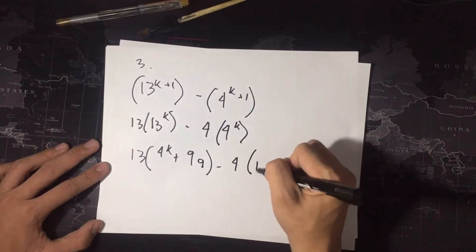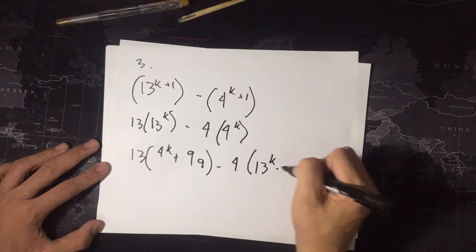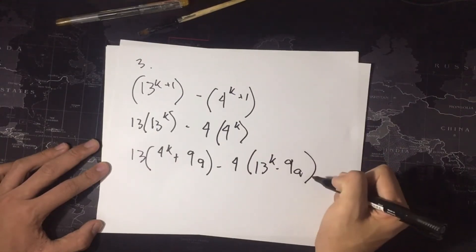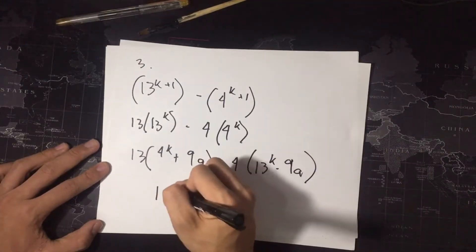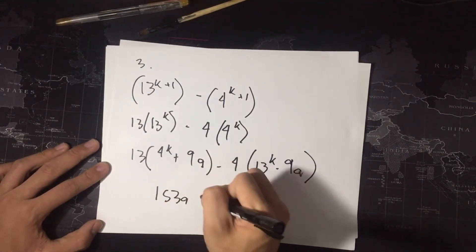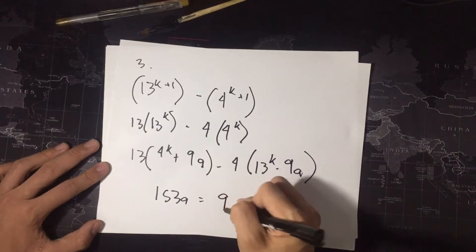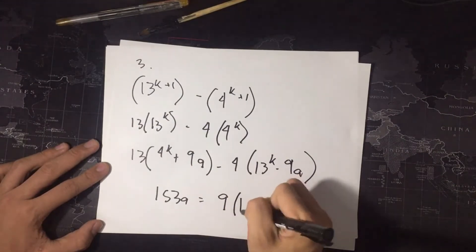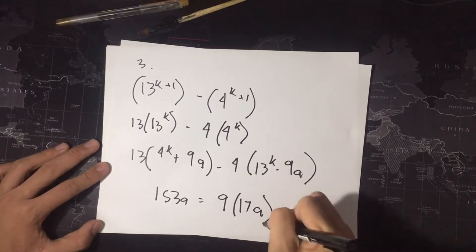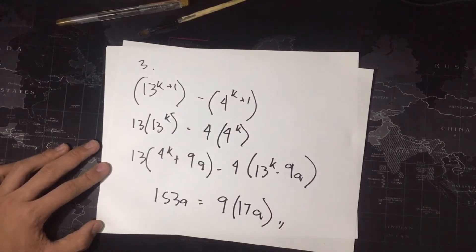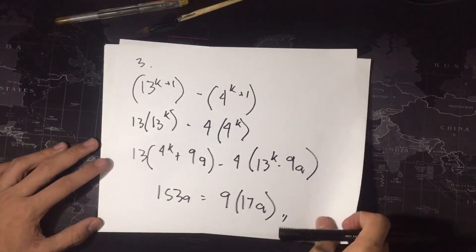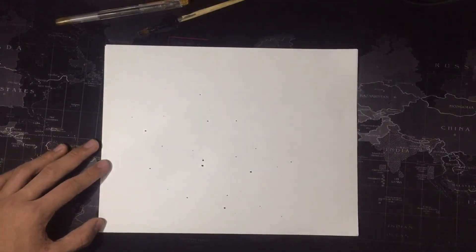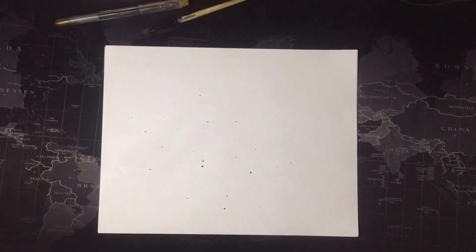From here, we can substitute the values from step 2 into the equation. Therefore, it becomes: 13 times the quantity of 4 raised to k plus 9a, minus 4 times the quantity of 13 raised to k minus 9a. We then distribute the values of 13 and 4 into the equation, yielding terms that combine to give a result that is divisible by 9.